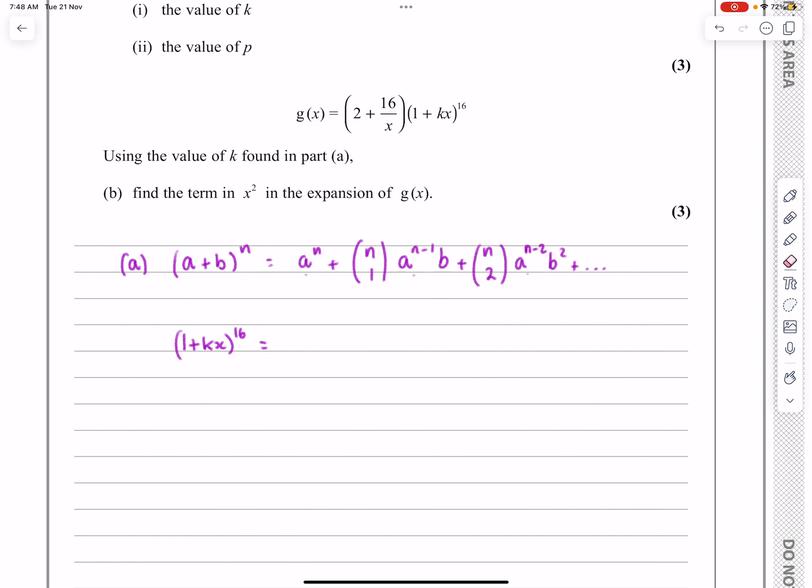So let's actually just make that substitution then. Putting in a to the power of n is just 1^16, I'm not going to put the powers in, I'm going to make it nice and easy, so that's 1 + 16C1 kx, and plus 16C2 kx all squared.